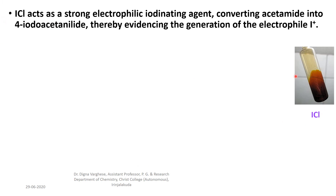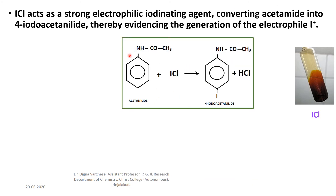Iodine monochloride acts as a strong electrophilic iodinating agent, converting acetanilide into 4-iodoacetanilide, thereby evidencing the generation of the electrophile I⁺. This is another proof for the formation of the monovalent cation. In this electrophilic reaction, I⁺ is attached to the benzene ring to form 4-iodoacetanilide, giving evidence for the formation of the monovalent cation.